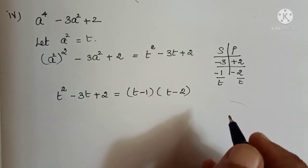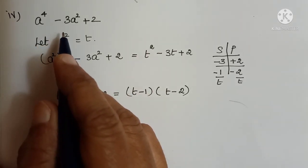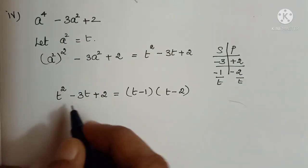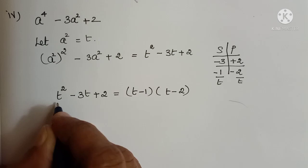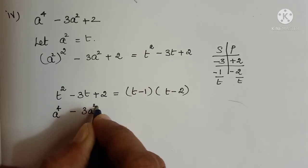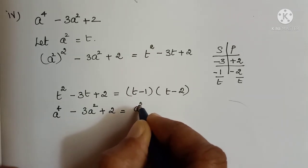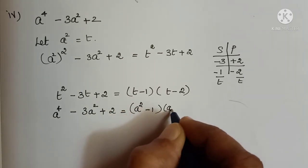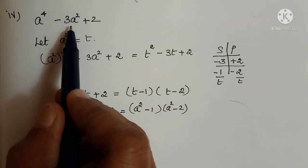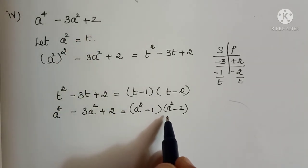Now replace t as a squared. So a power 4 minus 3a squared plus 2 equals (a squared minus 1) into (a squared minus 2).